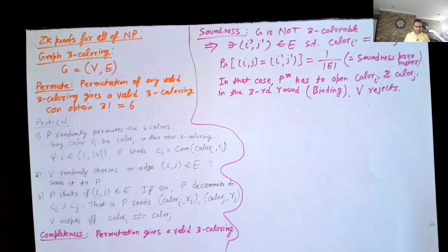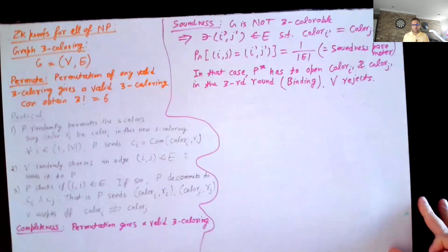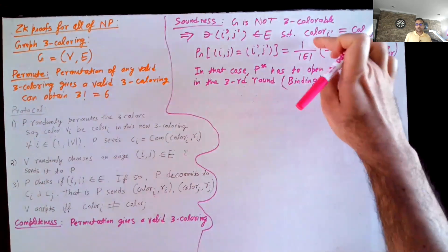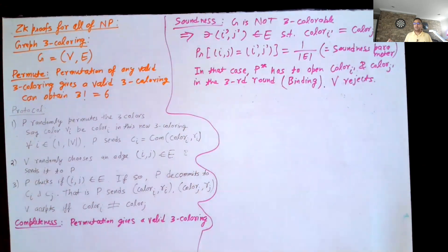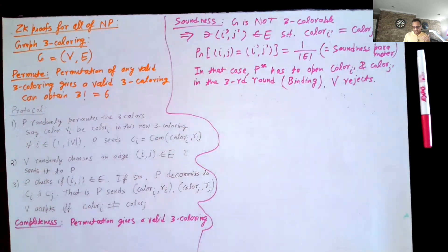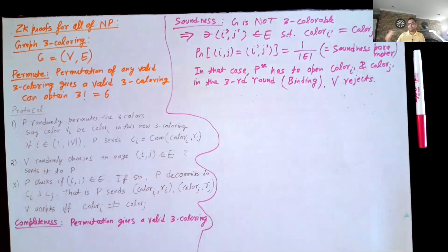The soundness parameter is 1/|E|, which is not negligible but not great. As we saw in the last class, you can always repeat the protocol a bunch of times — in particular here you would need to repeat the protocol more than |E| times, in fact much more than |E| times, to make sure the soundness parameter becomes very close to one.